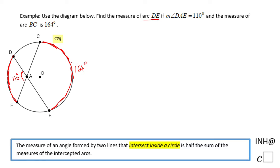For that reason, I'm going to use this theorem you see down here, which says the measure of an angle formed by two lines that intersect inside a circle is half the sum of the measures of the intercepted arcs. So in other words, the measure of angle DAE, the one that is given to us, is nothing else than half the sum of the measure of arc DE and arc BC. Those are what we call the intercepted arcs in this case.